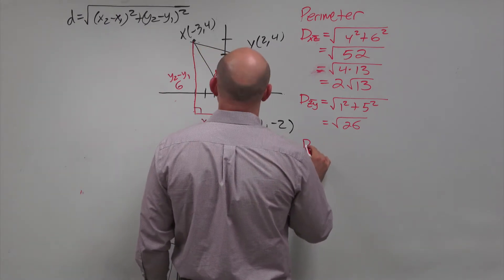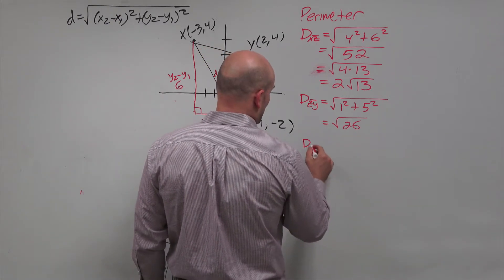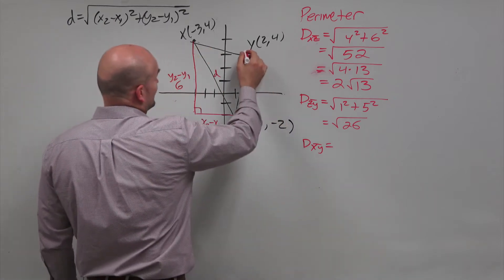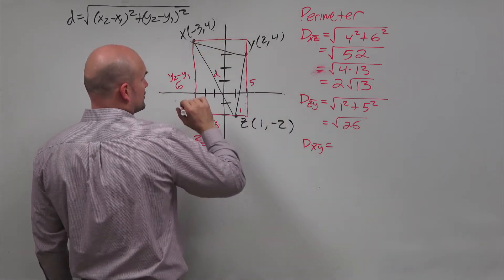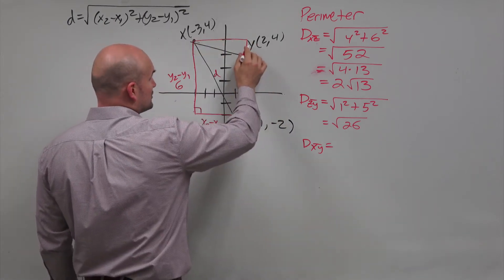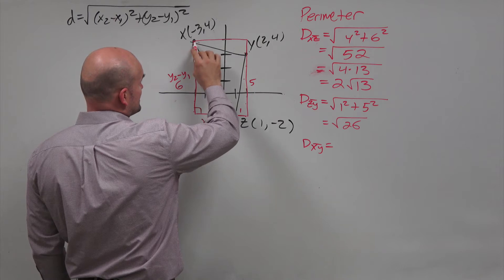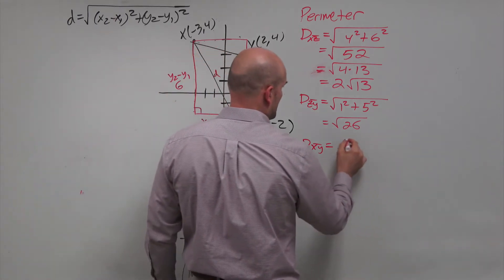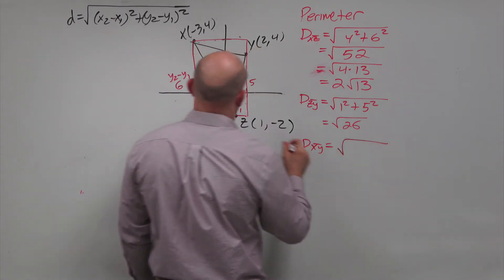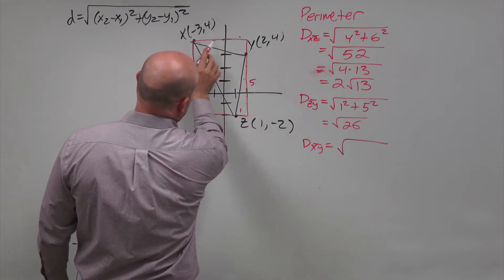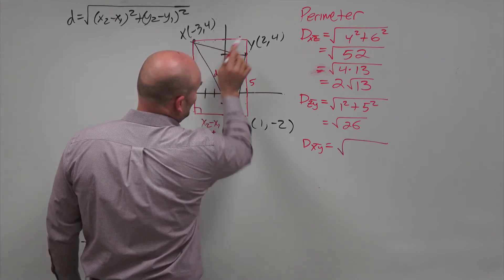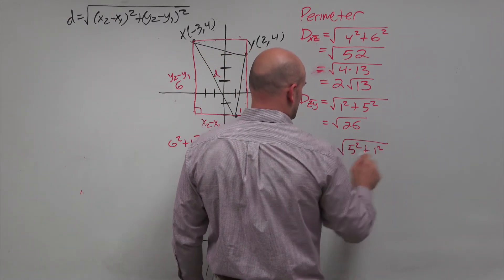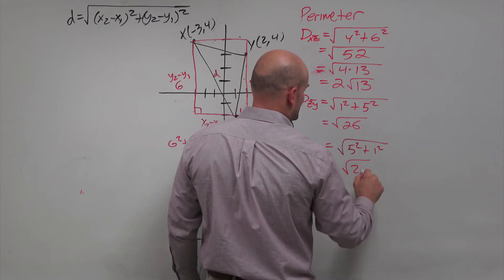My last one is going to be the distance of xy. The vertical distance here is 1, and the horizontal distance is 5. So this is 5 squared plus 1 squared, and that equals the square root of 26.